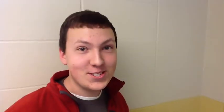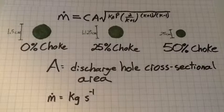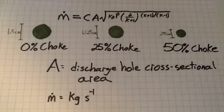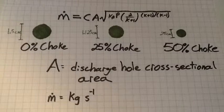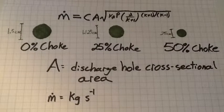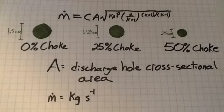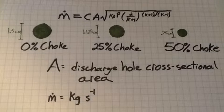Time to crunch some numbers! At the top of the page, you will see the equation for mass flow rate. In our experiment, everything under the radical and C at the front of the equation are considered to be constant. We are, however, varying A, the cross-sectional area of the tube's point of discharge.